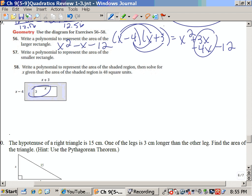Now I need to find the area of the smaller rectangle. That's really simple because 3 times x is just 3x. Now I need to find the area of the shaded region, so I'm going to take my x squared minus x minus 12 and subtract the 3x from the middle. That gives me x squared minus 4x minus 12.